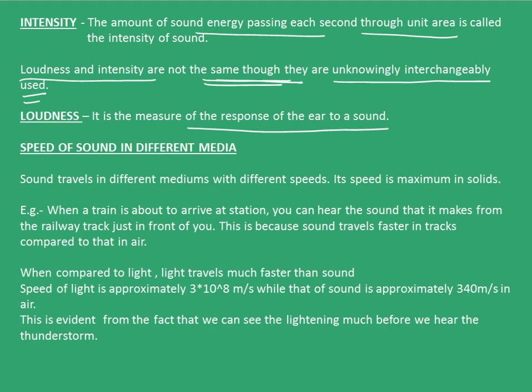Now let's see the speed of sound in different media. Sound travels in different mediums with different speeds. Its speed is maximum in solids. When a train is about to arrive at a station, you can hear the sound from the railway tracks — this is because sound travels faster in solids compared to air. When the speed of sound is compared to that of light, sound speed is very much less. Speed of light is approximately 3 × 10⁸ meters per second, while sound is approximately 340 meters per second in air. This is also evident from the fact that we see lightning much before we hear the thunderstorm.